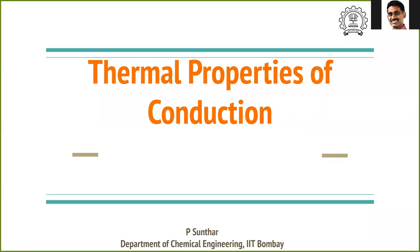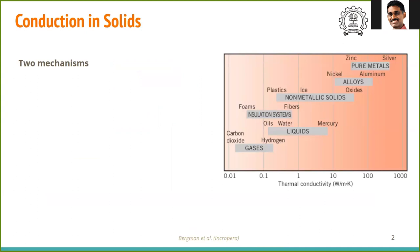In this video we'll see some thermal properties related to conduction. The graph here shows the approximate ranges of thermal conductivities of various materials. The lowest thermal conductivity is of gases and highest is of pure metals. Solids alone span a very wide range of thermal conductivities, from insulation systems which are almost close to gases, to very highly conducting materials such as copper and silver.